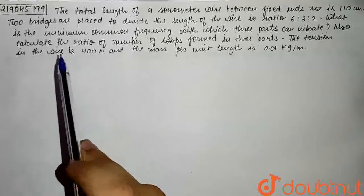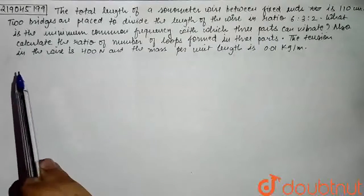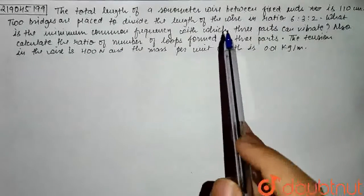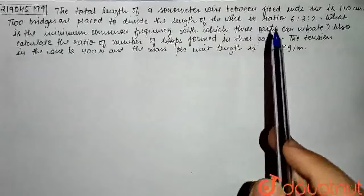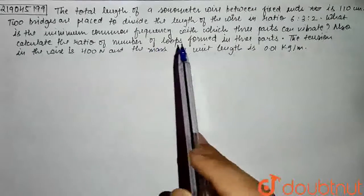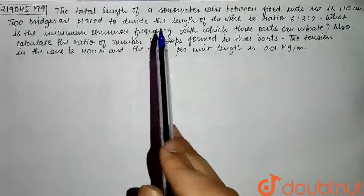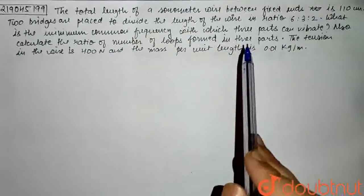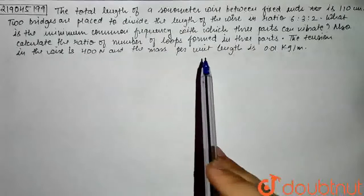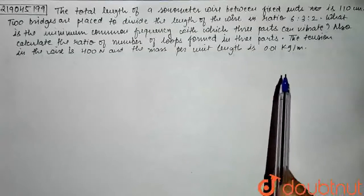In this question, we are given that the total length of a sonometer wire between fixed ends is 110 cm. Two bridges are placed to divide the length of the wire in the ratio 6:3:2. What is the minimum common frequency with which the three parts can vibrate? Also, calculate the ratio of number of loops formed in these parts. The tension in the wire is 400 N and the mass per unit length of the wire is 0.01 kg per meter.